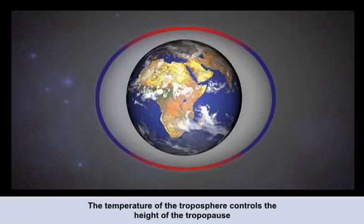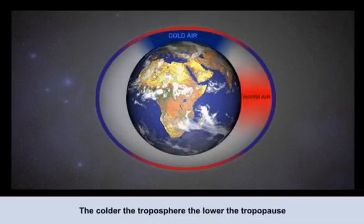What controls the height of the tropopause is the general temperature of the troposphere. As a general rule, the colder the troposphere, the lower the tropopause, and vice versa. The extremes of this are demonstrated very well over the poles and the equator.